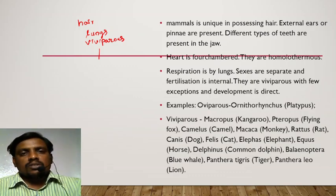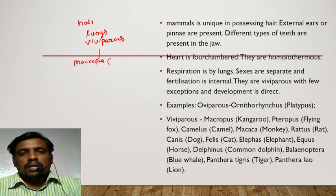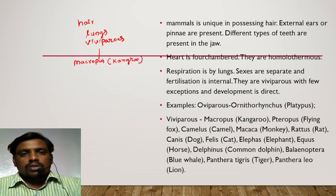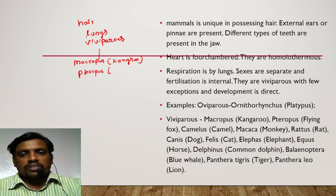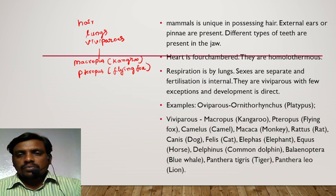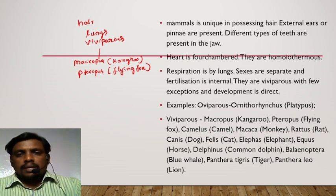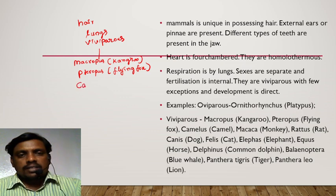Let us see some of the examples for viviparous animals. Macropus is a good example — kangaroo. Pteropus, the flying fox. Camelus — camel. Macaca — monkey. Rattus — rat. Canis, commonly called dog.